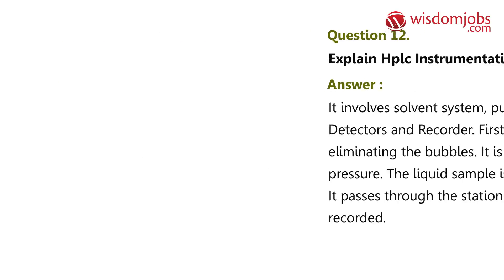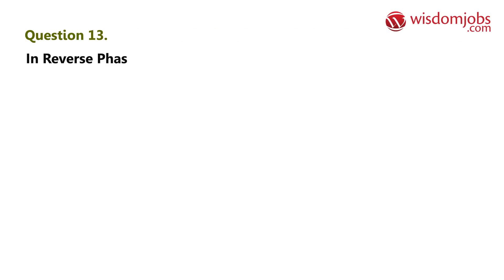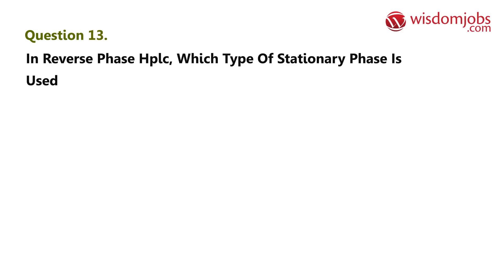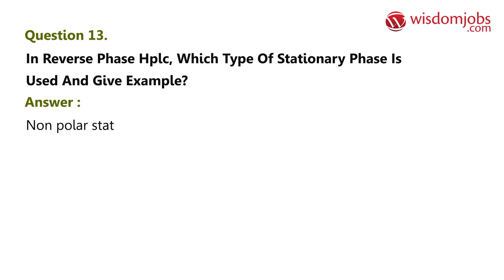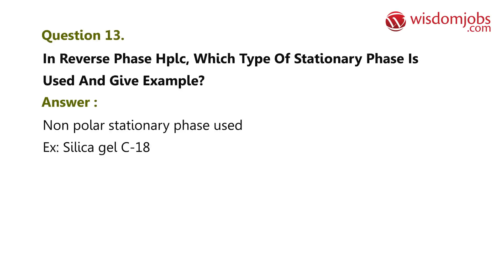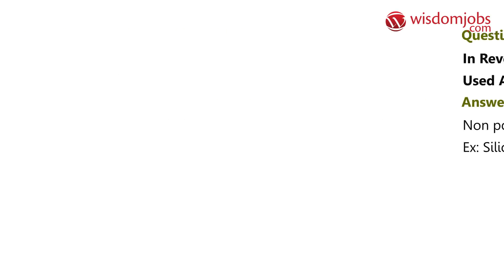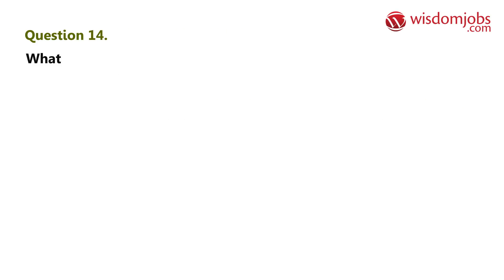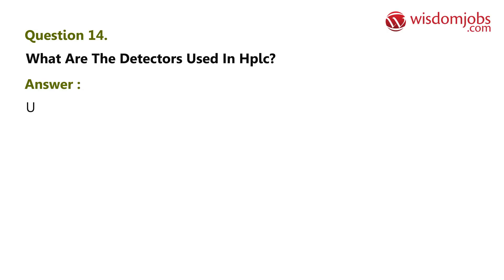Question 13: In reverse phase HPLC, which type of stationary phase is used? Give an example. Answer: Non-polar stationary phase is used, e.g., silica gel C18. Question 14: What are the detectors used in HPLC?